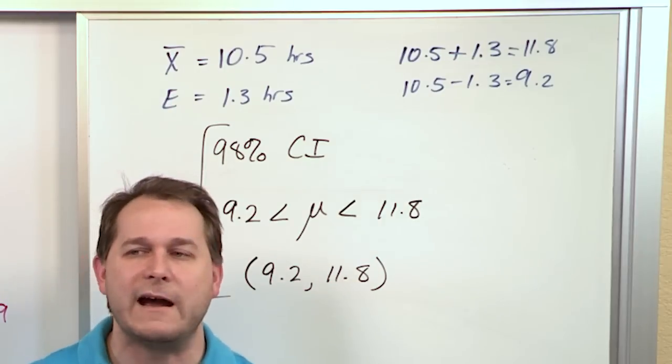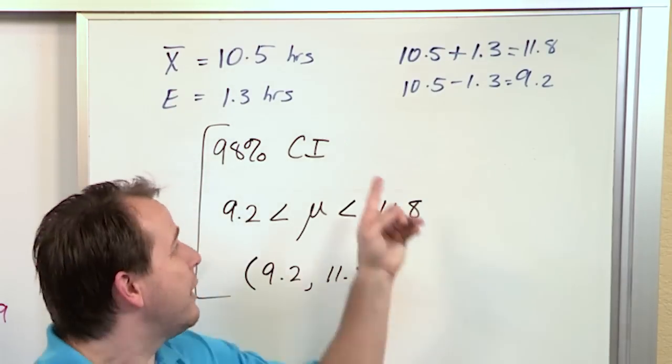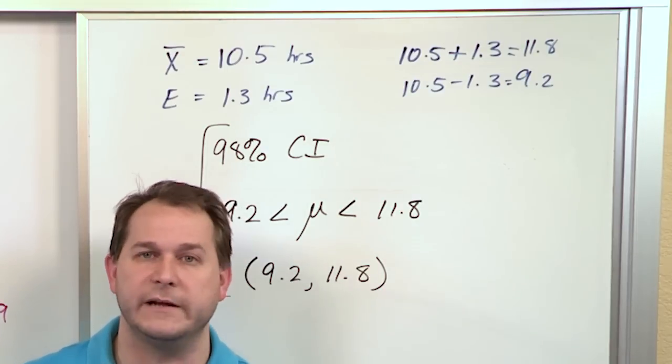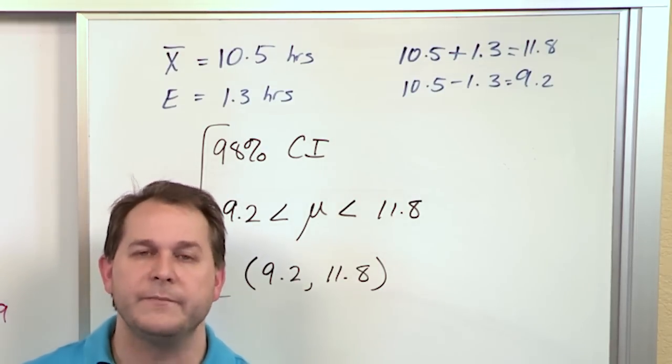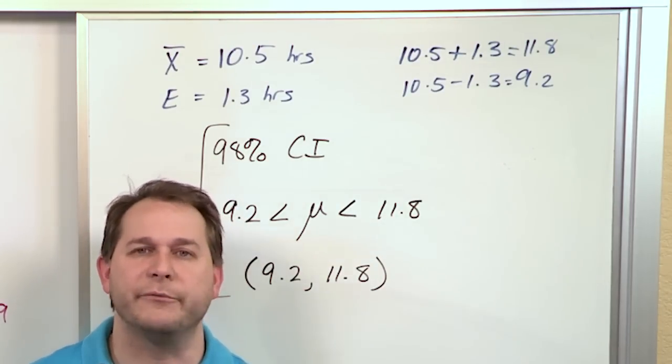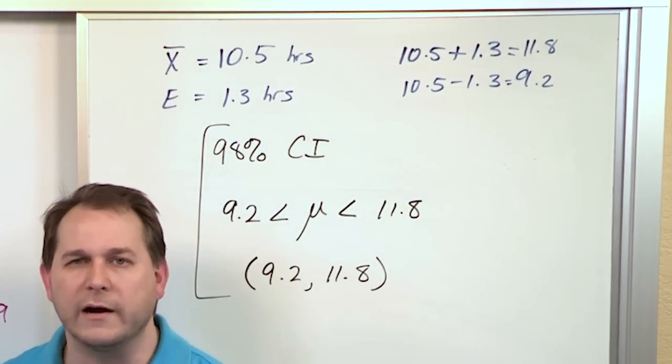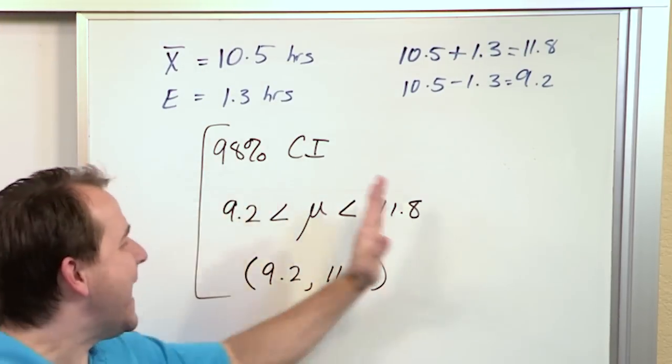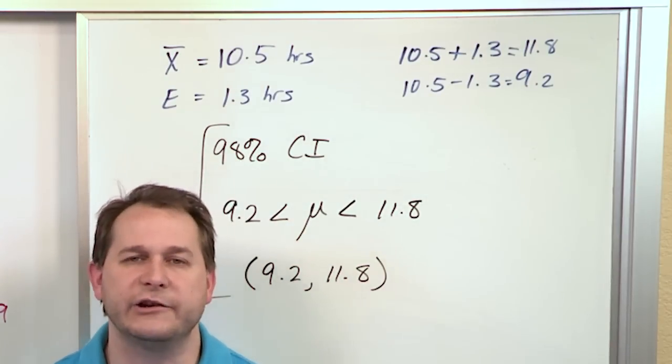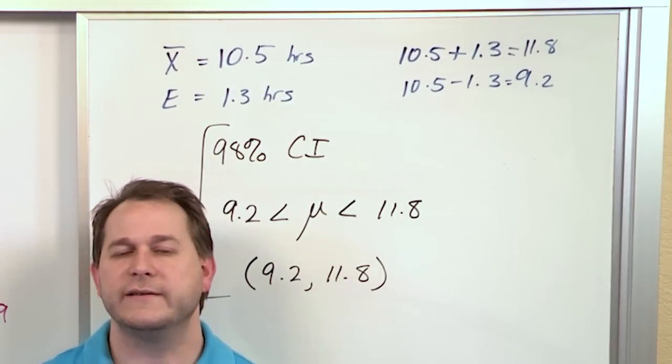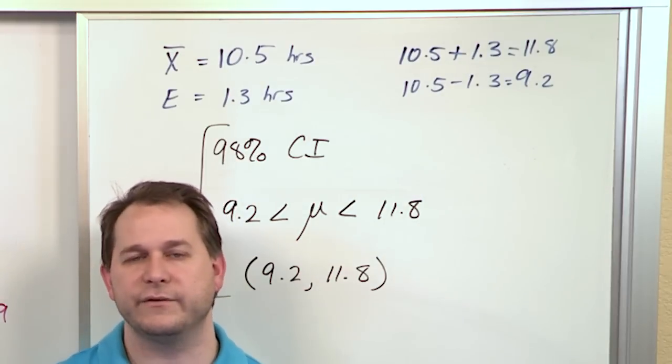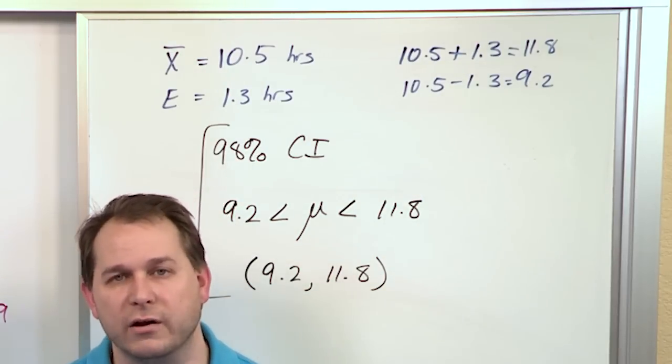Now, these two problems have been pretty simplified because I've given you the sample mean and the margin of error. In future problems, you're going to learn how to calculate this margin of error yourself. That margin of error is going to be dependent on the level of confidence and your sample size. We haven't done any of that in these problems. I'm just kind of crawling before we walk. Once you get that margin of error, all you do is add it and subtract it to get the confidence interval. Follow me to the next section where we'll build these skills. You'll continue learning about confidence intervals one step at a time. This topic is one of the most useful in all of statistics.